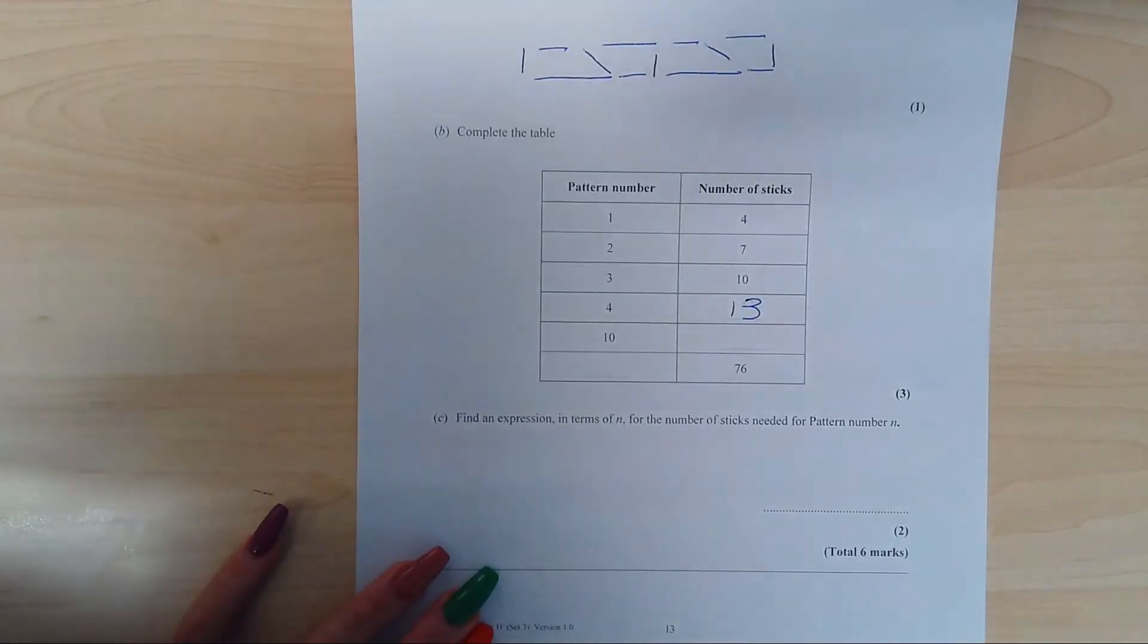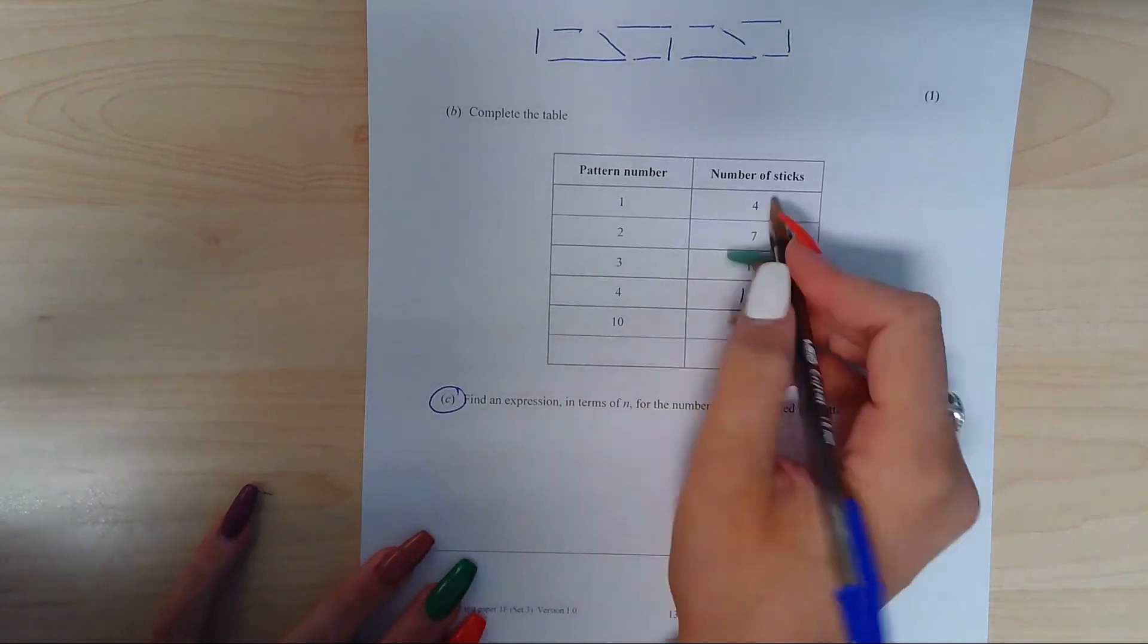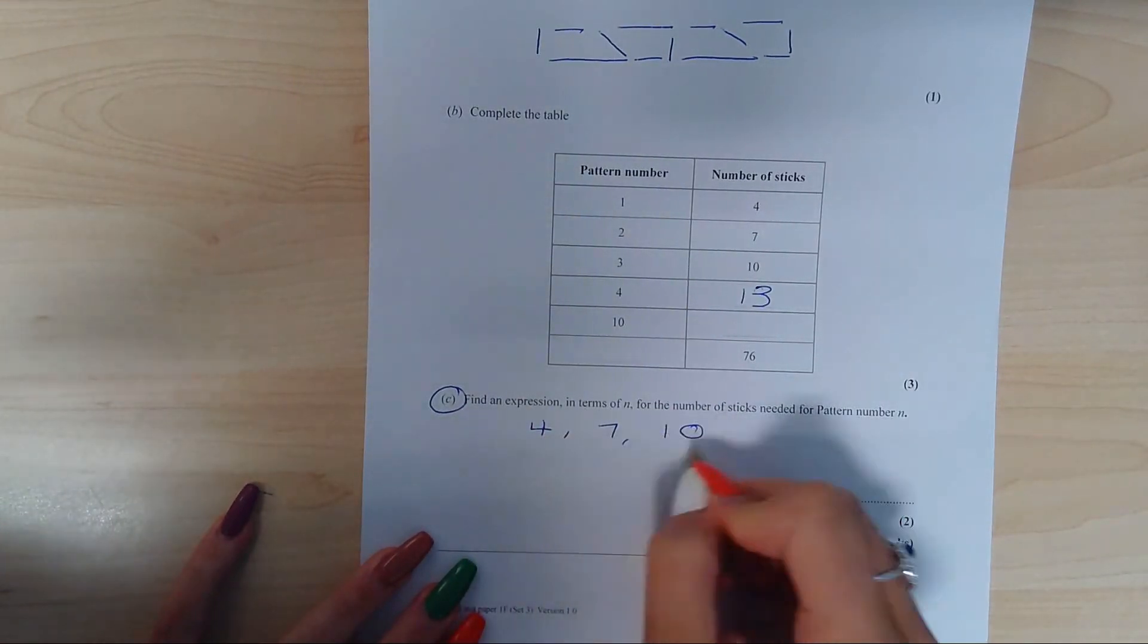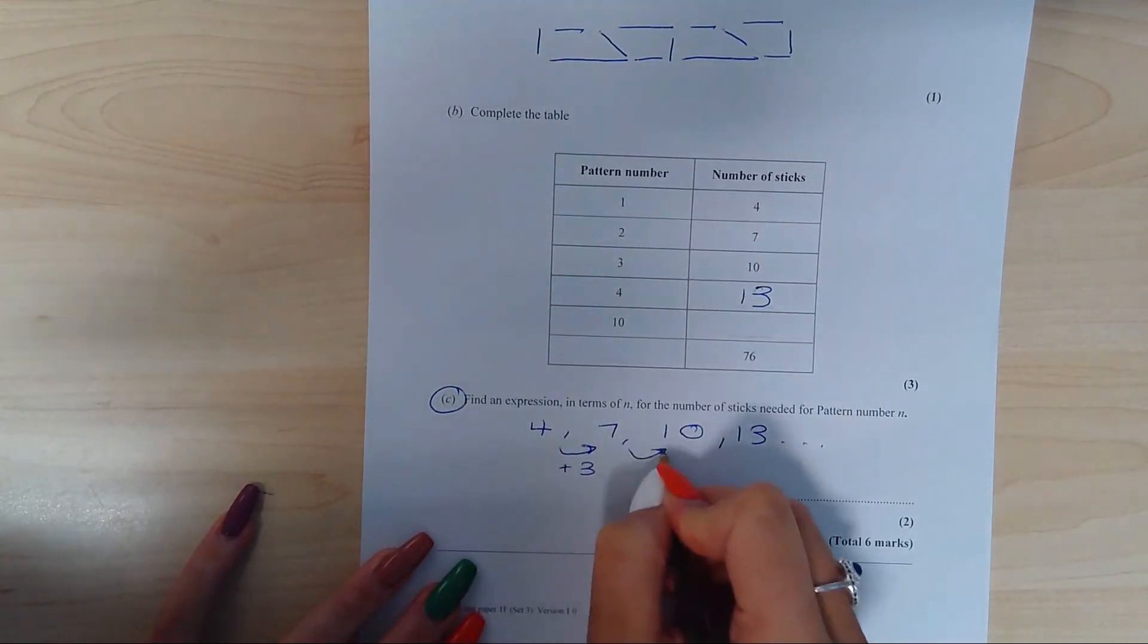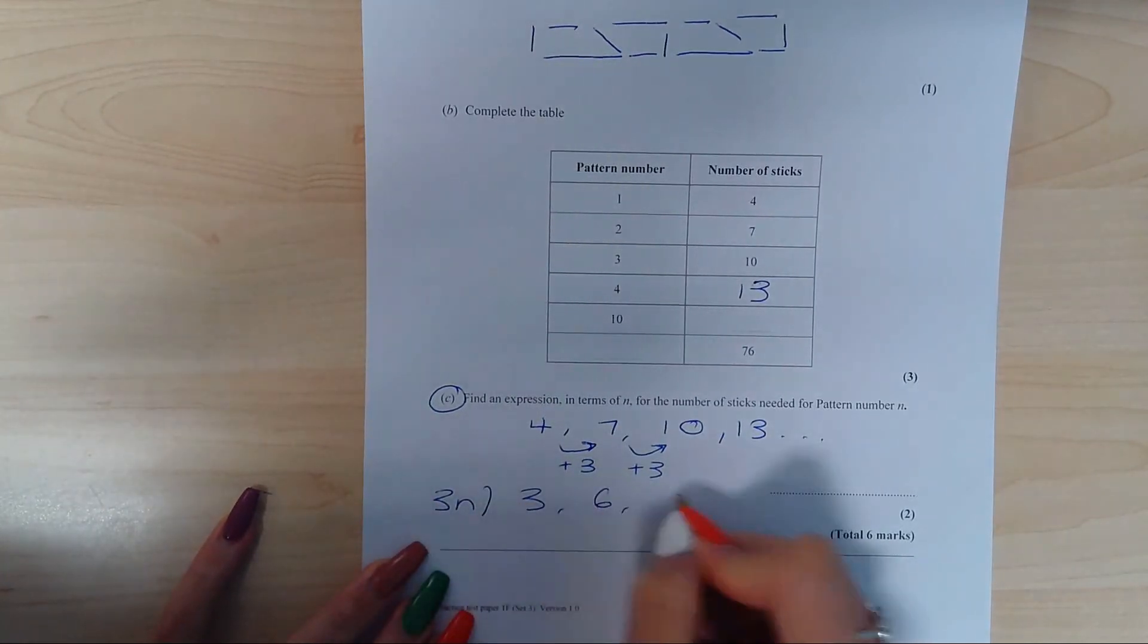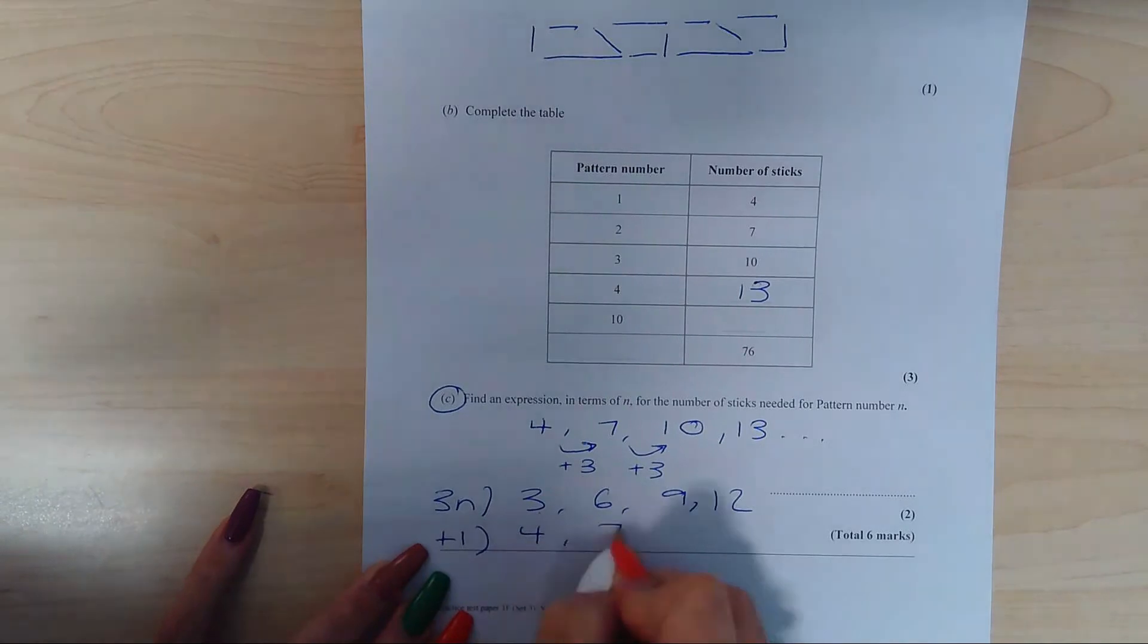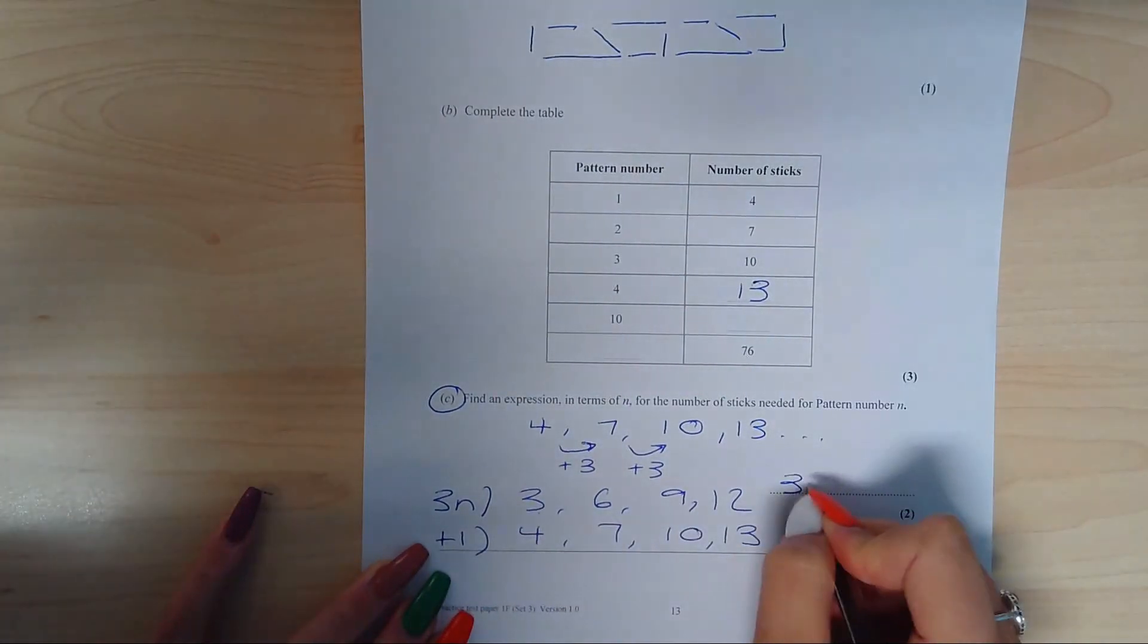And in order to fill in the rest of the table, I would actually come to question C first, finding an expression in terms of n. So you are finding the nth term. So the pattern you already know, the sequence: 4, 7, 10 and 13 and so on. Finding the term to term rule, which is adding on three each time. Writing out your three times table, and then working out how do we get from the number that we are on to our original number. We need to add on 1. Therefore your nth term is 3n add 1.